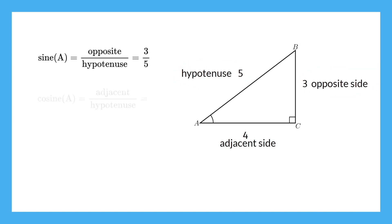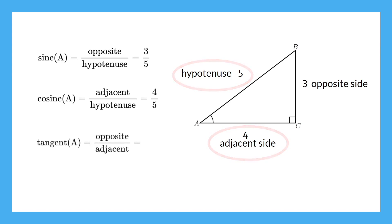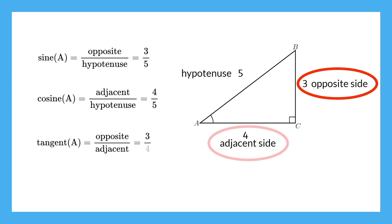Next, let's define the cosine ratio. Cosine is adjacent over hypotenuse. So for angle A, we have an adjacent side of 4 and 5 for the hypotenuse. Tangent is defined as the ratio of the opposite side over the adjacent side. The opposite side to angle A is 3, and the adjacent side is 4.